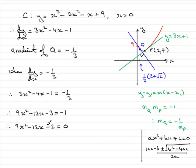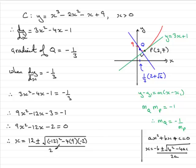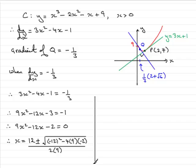Here a is 9, b is minus 12, c is minus 2. Applying the quadratic formula: x equals minus minus 12, so that's 12, plus or minus the square root of minus 12 all squared, minus 4 times 9 times minus 2, all divided by 2 times 9. Working this out, we get x equals 12 plus or minus the square root of 216, all divided by 18.